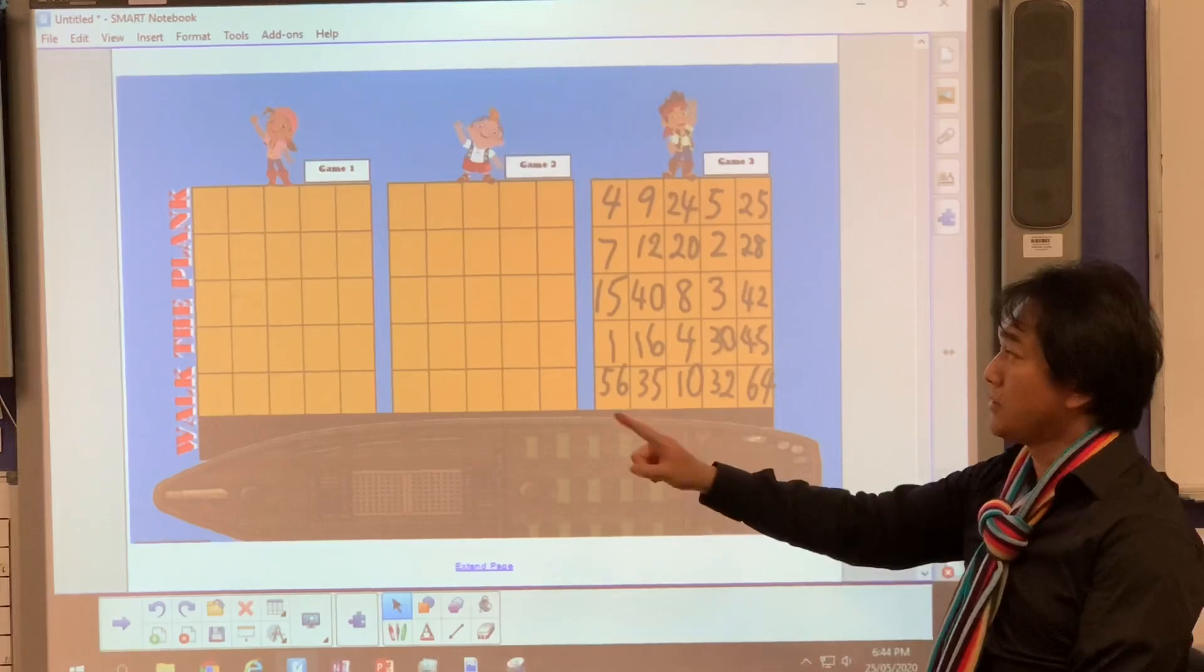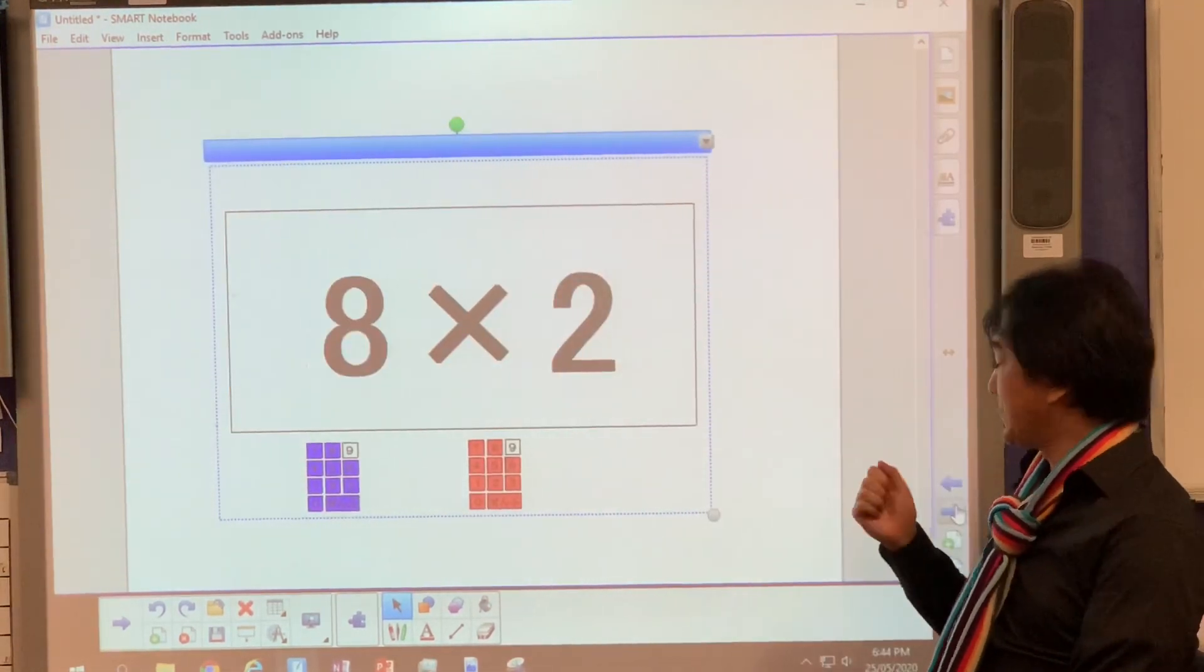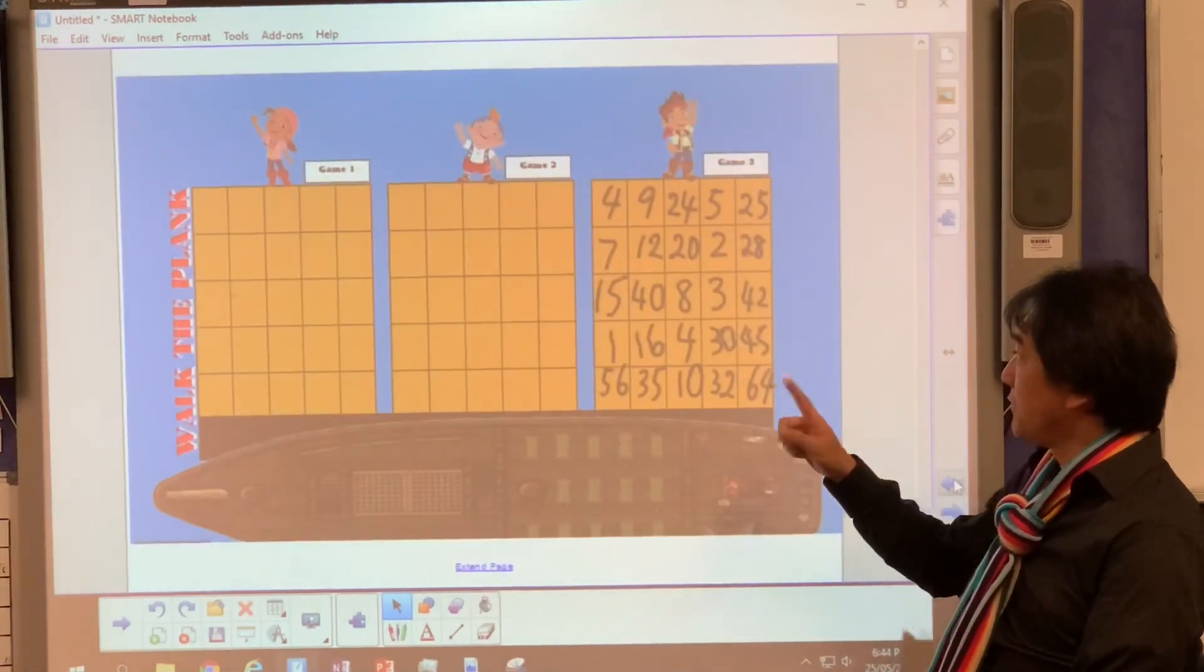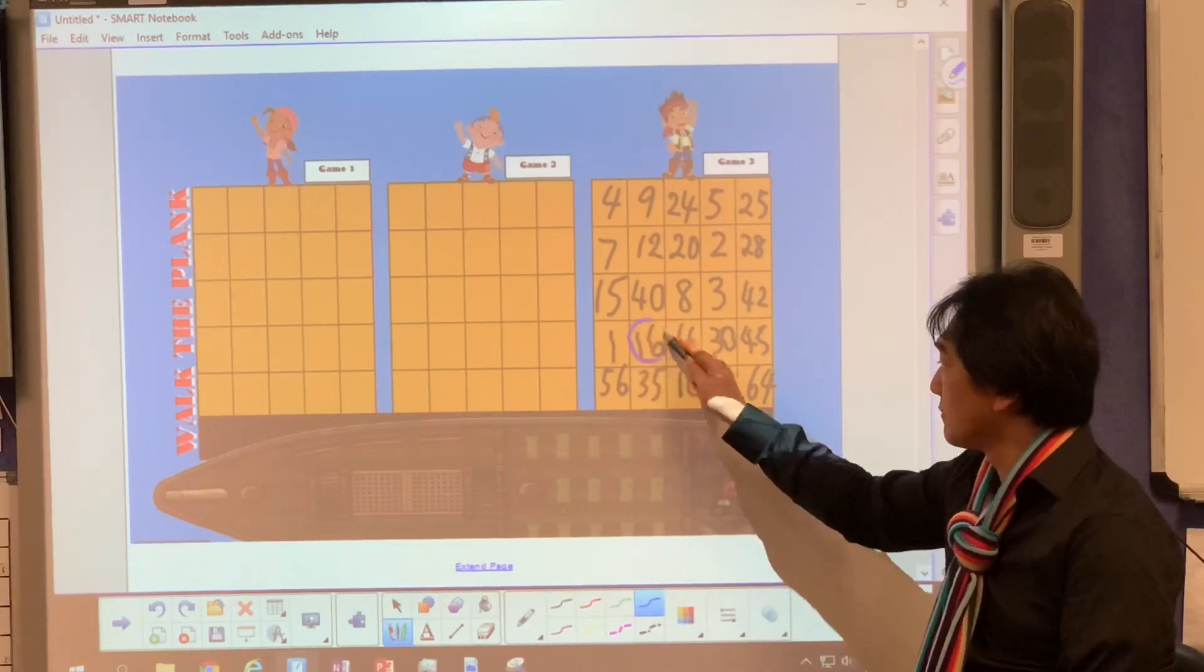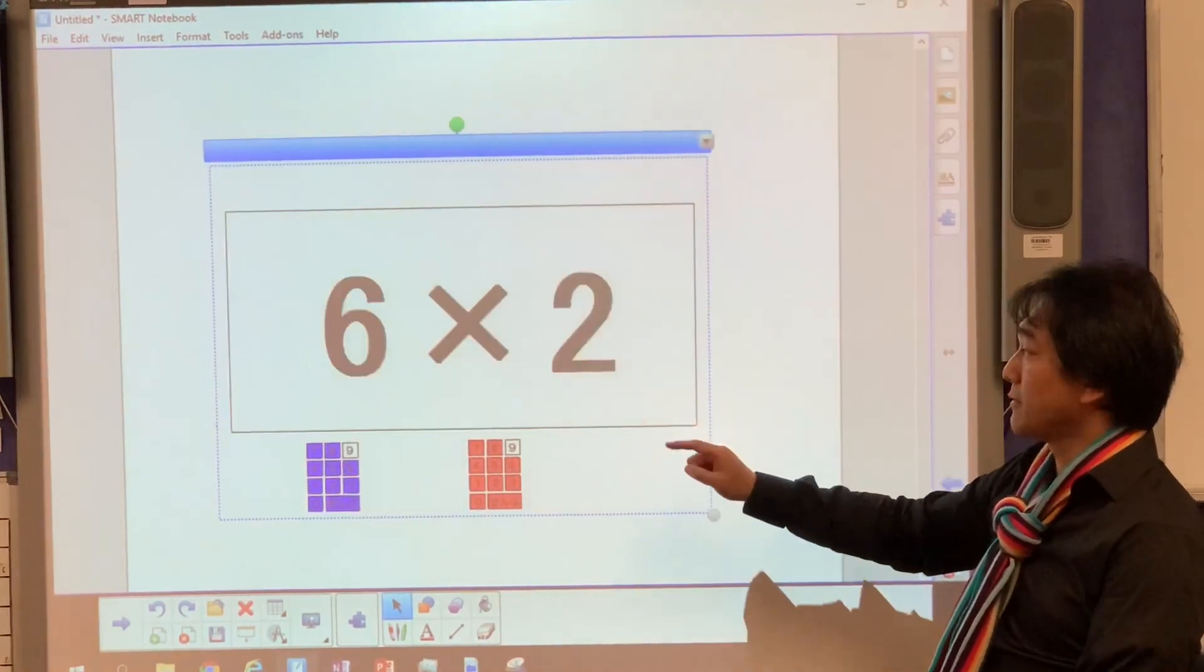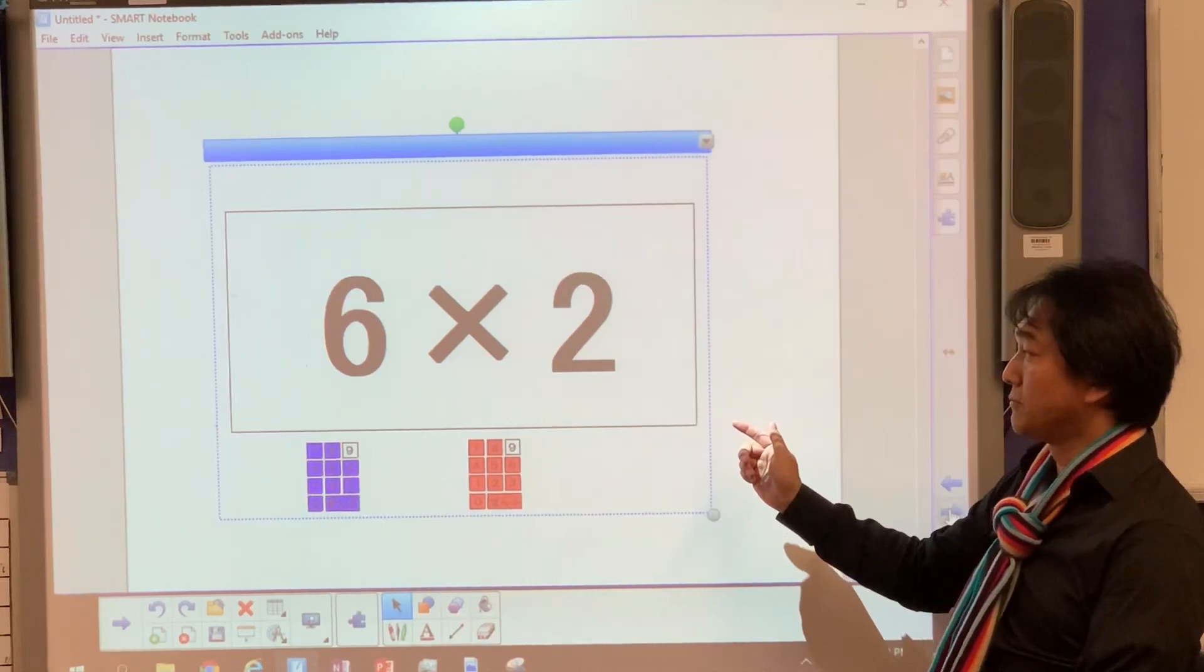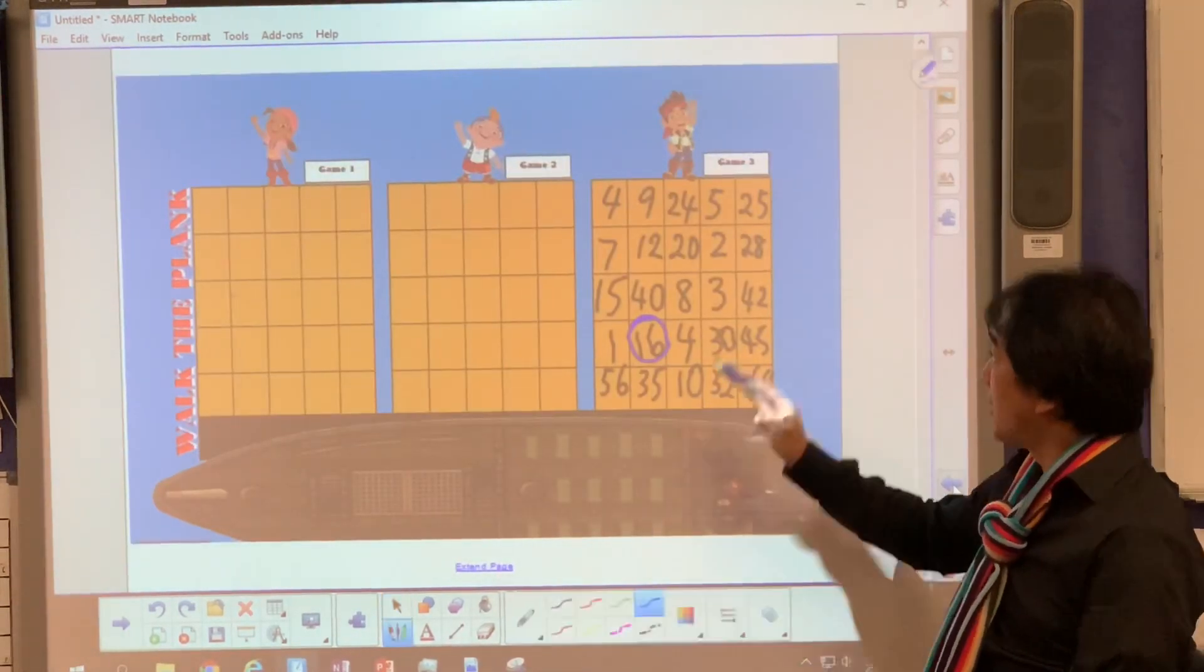So ready, it's you versus me. Ready for it. First number is 16. If you have 16, you circle 16. I have 16. Six twos. 12. I have 12.